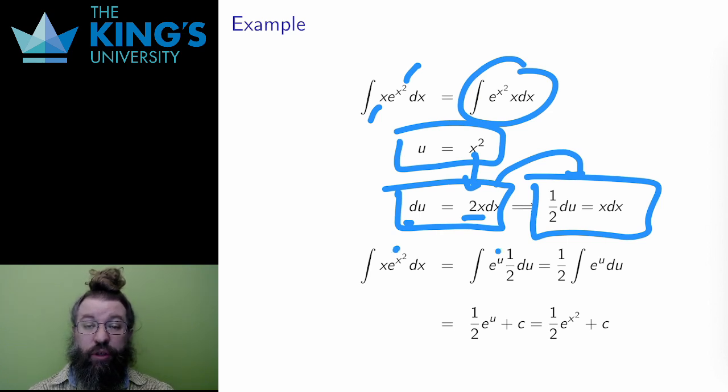Then I do the substitution. x² is replaced with u. x dx is replaced with ½ du. I pull the ½ out by linearity, and then I can integrate. The antiderivative of e^u is still e^u. Regardless of what the variable is called, the exponential is still its own integral and derivative. And then I add the constant of integration, and finally, I reverse the substitution.